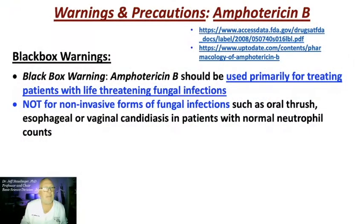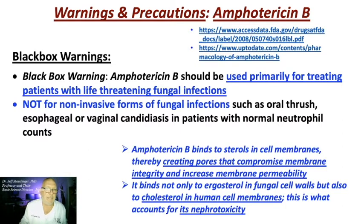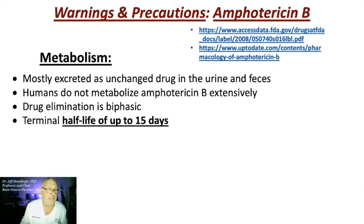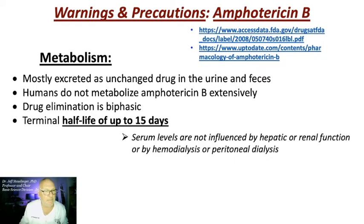Amphotericin B is a pregnancy category B drug. As a black box warning, amphotericin B should be used primarily for treating patients with life-threatening fungal infections and is not to be used for non-invasive forms. Amphotericin B creates pores that compromise membrane integrity in fungi and increases membrane permeability, but also binds cholesterol in human cells — accounting for its nephrotoxicity. This drug is mostly excreted unchanged in urine and feces; humans do not metabolize amphotericin B. The drug elimination is biphasic, with a half-life of up to 15 days. Serum levels are not influenced by hepatic or renal function or by hemodialysis or peritoneal dialysis.